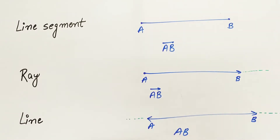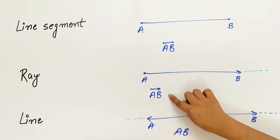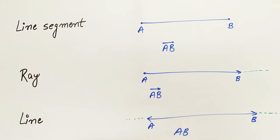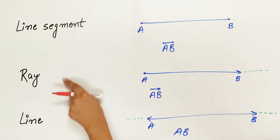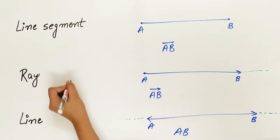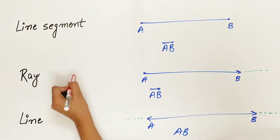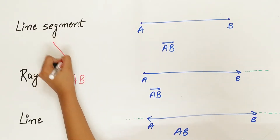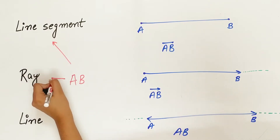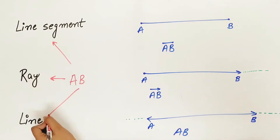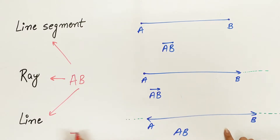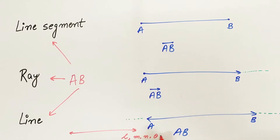Remember that in NCERT, none of the symbols are used to denote line segment, ray, and line. AB is used to denote line segment, ray, as well as a line. We can also denote a line by small letters — for example, L, M, N, O, P — any letter.